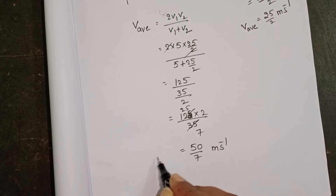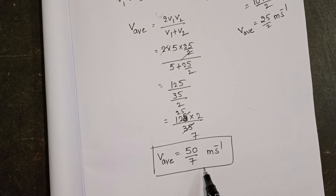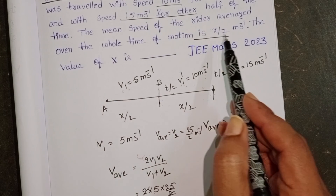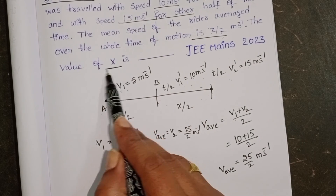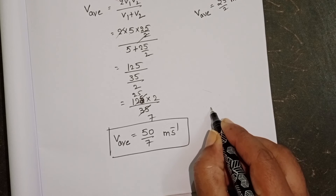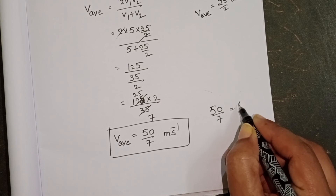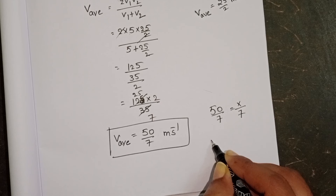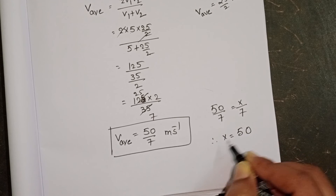This simplifies to 50 by 7 meter per second, which is the average speed for the complete journey. The given average speed is x by 7, so comparing, x is equal to 50.